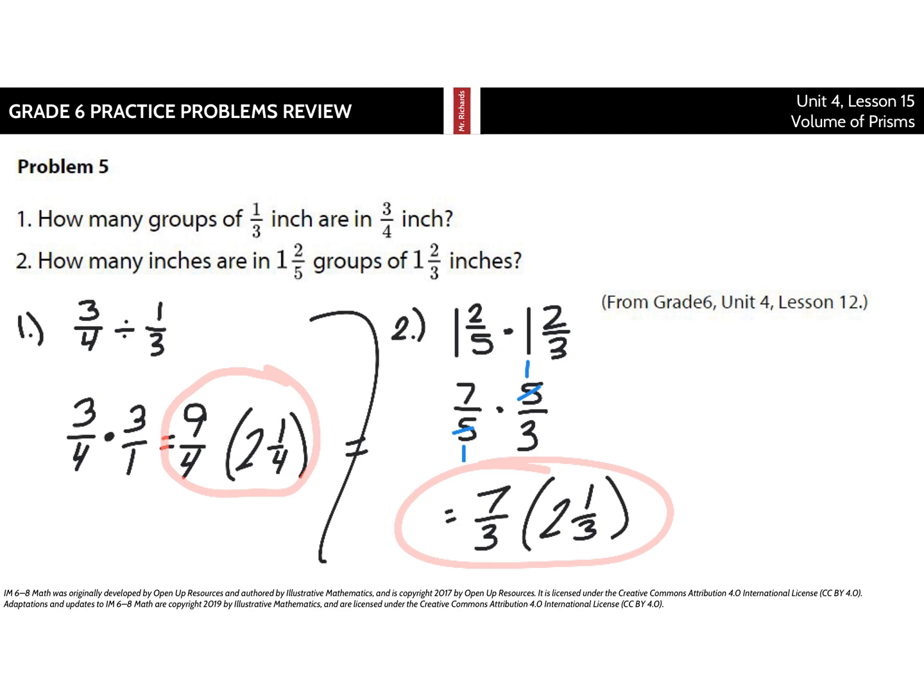Question two is a little bit different in this problem. How many inches are in one and two-fifths groups of one and two-thirds inches? Well, you have one and two-fifths groups. Each one of them is one and two-thirds inches. So just multiply them together. You get seven-fifths times five-thirds cross. Simplify, seven-thirds inches are in these groups here. And that's also simplified to two and a third.